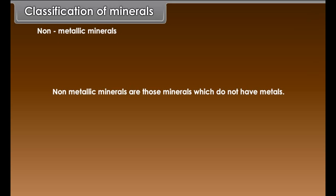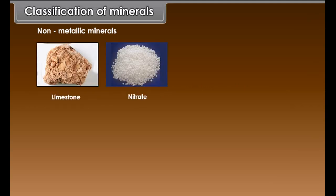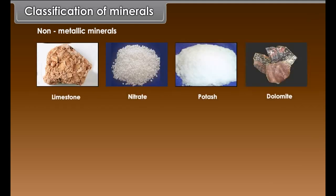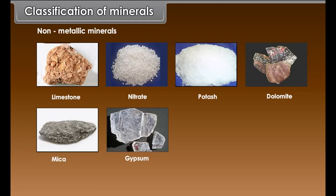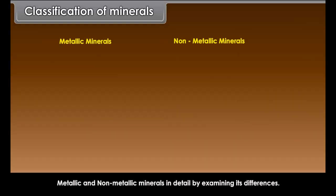Non-metallic minerals are those minerals which do not have metals. Examples include limestone, nitrate, potash, dolomite, mica, gypsum, coal, petroleum, etc. Now, we will study metallic and non-metallic minerals in detail by examining its differences.